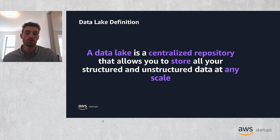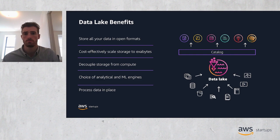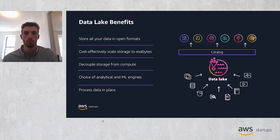A data lake is a centralized repository that allows you to store all of your structured and unstructured data at any scale. It connects your relational and non-relational databases to your big data processing and machine learning workflows, as well as hosting logs and other such data. With data from more sources all in one place, you can collaborate and analyze data in different ways, leading to better and faster decision making. You can also more easily enforce data governance, ensuring your customer's data remains secure. It is the foundation on which many analytical workflows are built on AWS, and it opens the door to other analytical and ML engines.